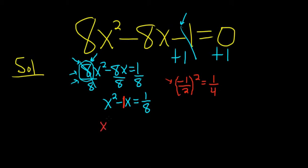Then we add that to both sides: x² - x + 1/4. And over here, same thing: 1/8 + 1/4.